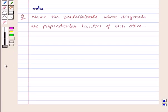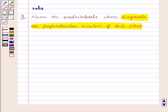Hi and welcome to the session. I am Neha and today I am going to discuss the following question with you. The question says: name the quadrilaterals whose diagonals are perpendicular bisectors of each other. Let's see its solution.